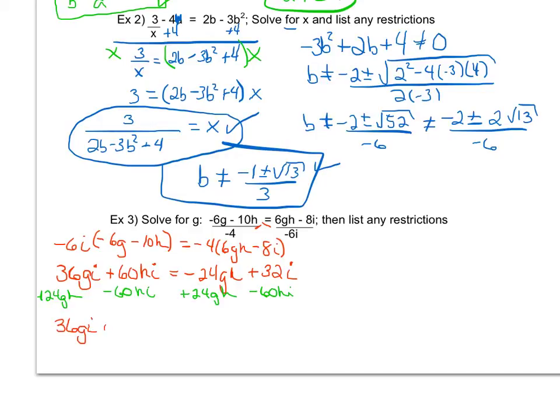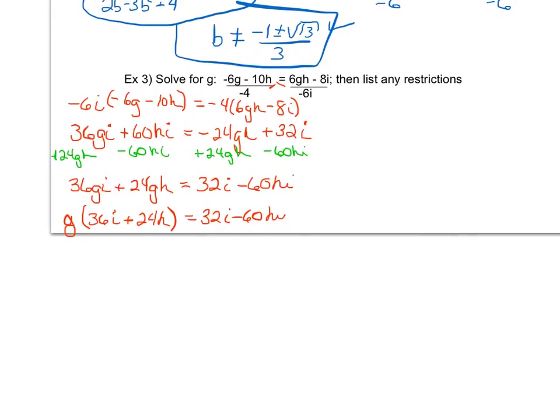I'll get 36gi plus 24gh equals, again these need to stay separate since this has an i and this has an hi, they're not like terms, 32i minus 60hi. And now I realize that these two terms both have a g, so I'm going to factor that g out, leaving me with g times 36i plus 24h equals 32i minus 60hi. I realize that g was not my greatest common factor, 24 and 36 here are both divisible by 4, or 6 even. However, I'm not concerned about those. The reason I'm taking only a g out is because I want to get g by itself, and if I take just a g out, I can now divide both sides by this expression.